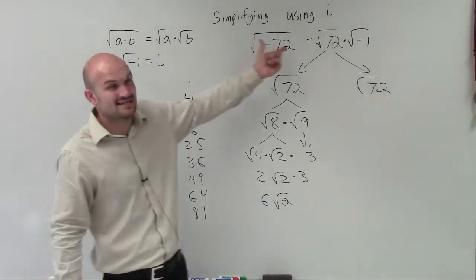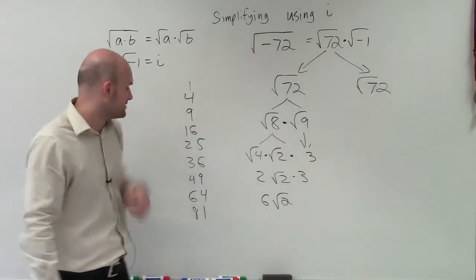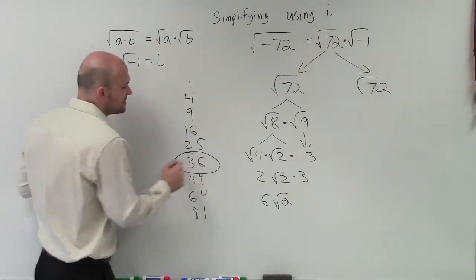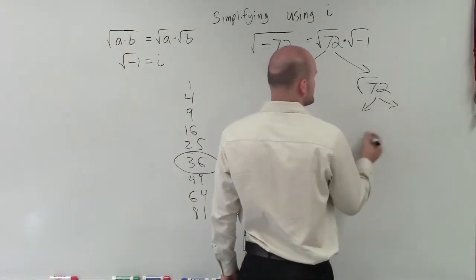So we know that 9 divides into 72, but 9 is not the only square number that we have that evenly divides into 72. Our actual largest is going to be 36. And 36 divides into 72 2 times.